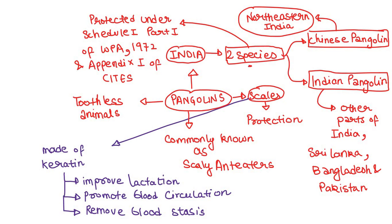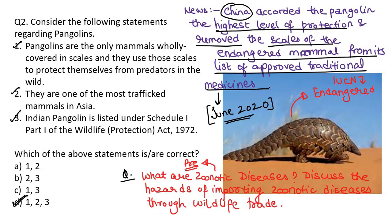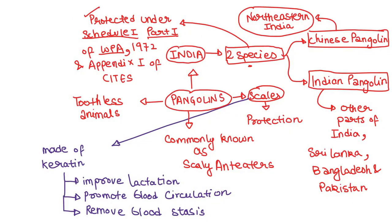These two species of Indian pangolins are protected under Schedule 1, Part 1 of the Wildlife Protection Act 1972, and Appendix 1 of the Convention on International Trade in Endangered Species, known as CITES. These are toothless animals, also known as scaly anteaters. Their scales are made up of keratin — the same protein present in human nails.